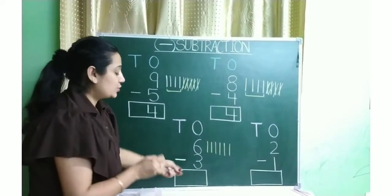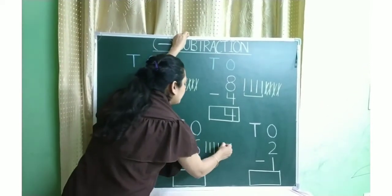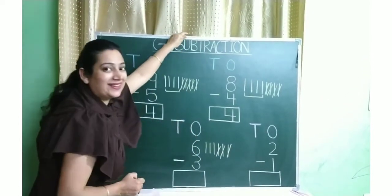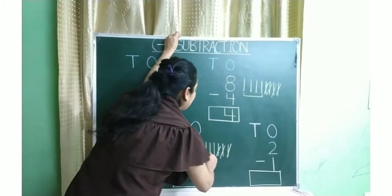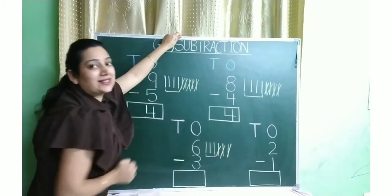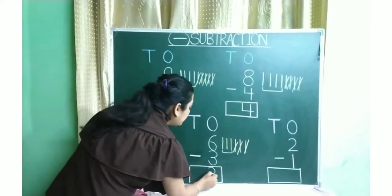Number 3. So we cut 3 lines. 1, 2, 3. How many lines are left? 3 lines. So our answer will be number 3.